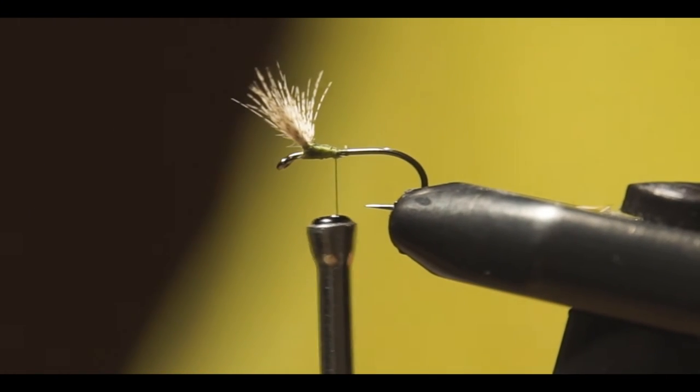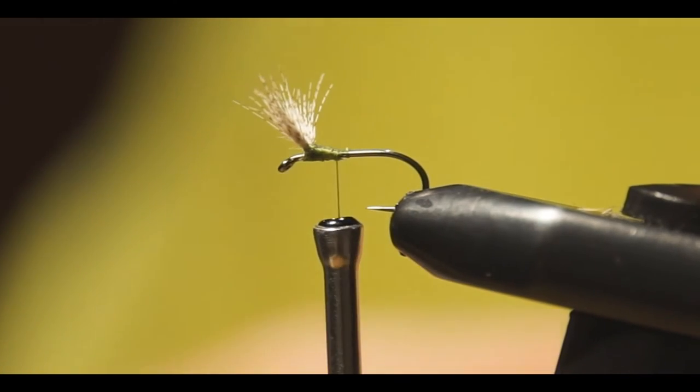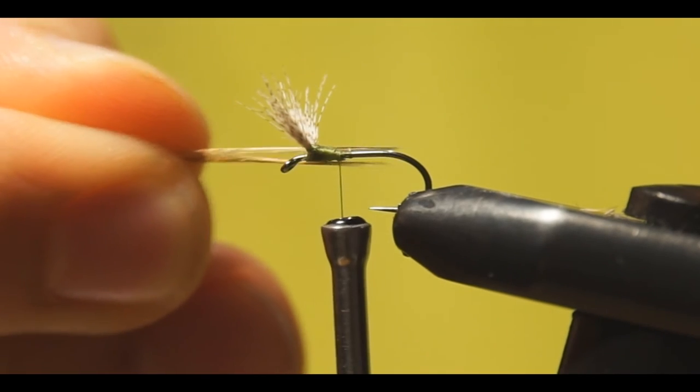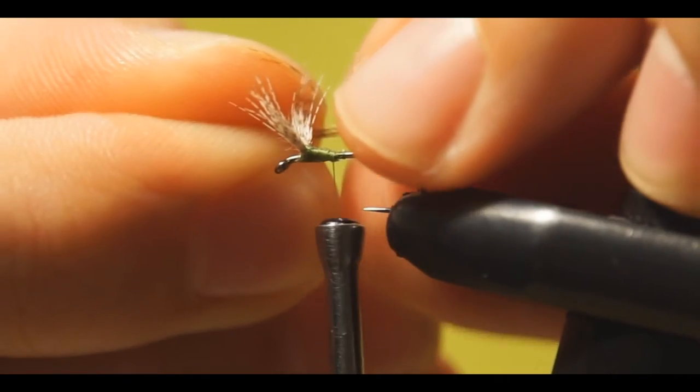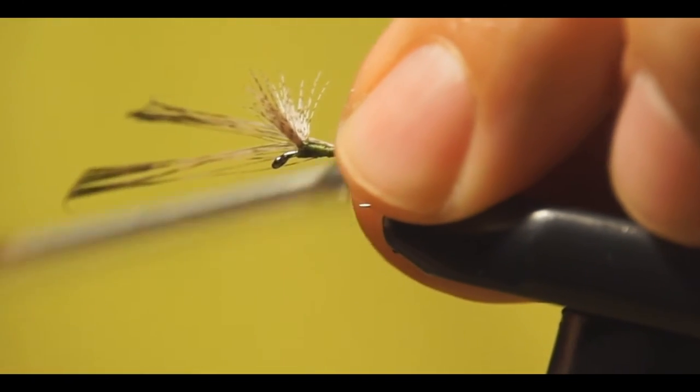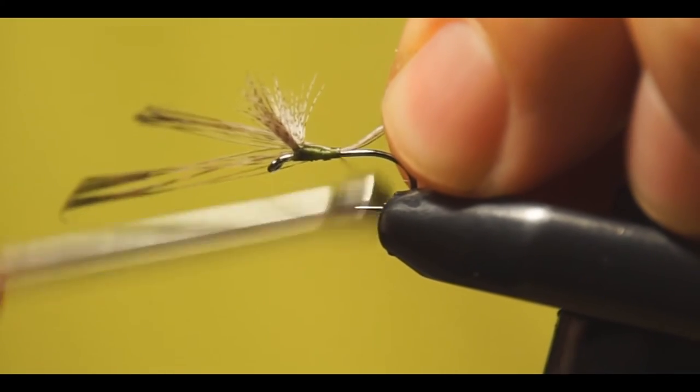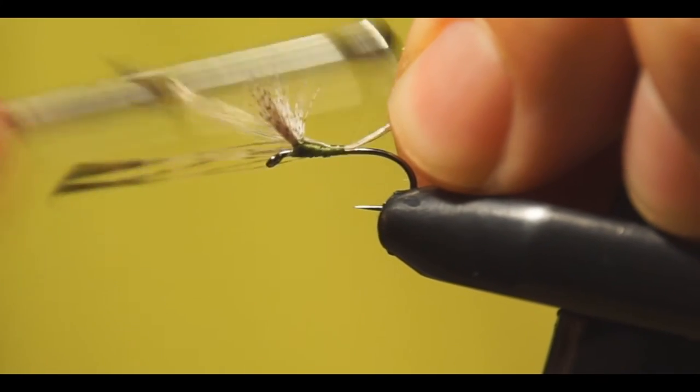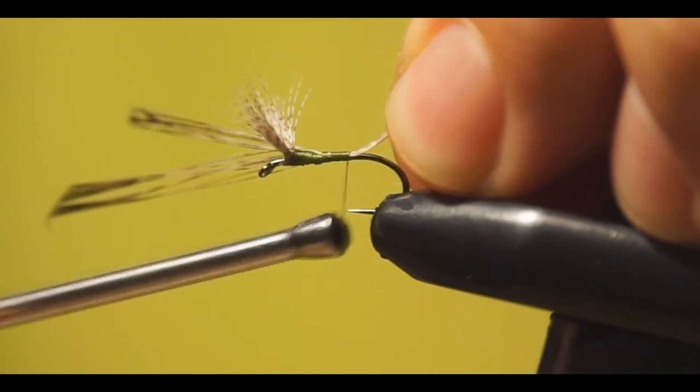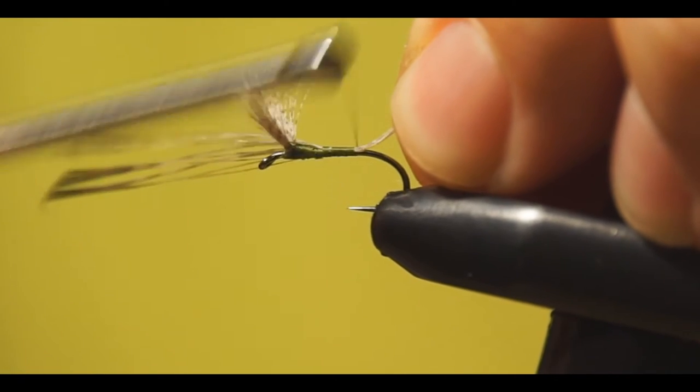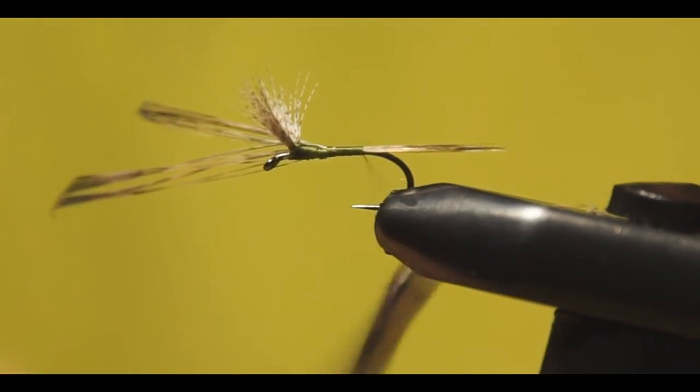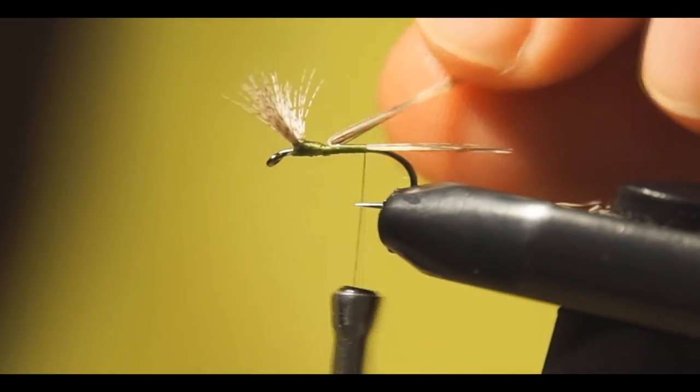And we'll use for the tail, I love to make them with coque de leon, about the length of the hook shank. Just grab it, tie it in straight after the drop, then make sure you pull them a little bit up so they will sit on the hook shank and won't go to the side. Good. Cut the excess here.